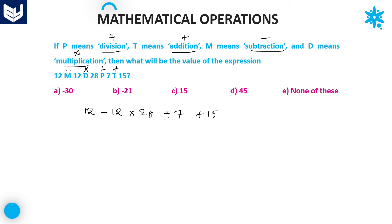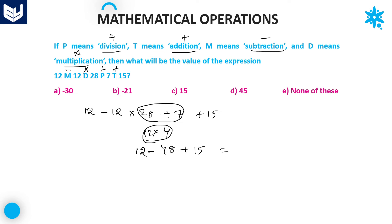According to BODMAS, first priority is division: 28 divided by 7 equals 4. Then multiplication: 12 into 4 equals 48. Now we have 12 minus 48 plus 15, which is 27 minus 48, equal to minus 21. Option B is the right answer.